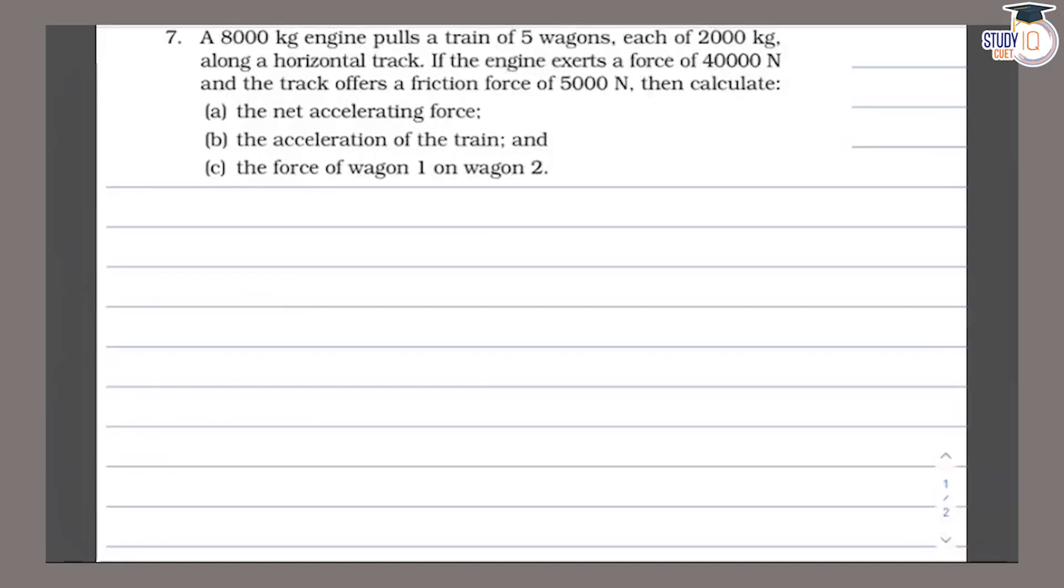This is question number 7 from class 9 NCERT chapter 4. There is an 8000 kg engine that pulls 5 wagons, each of 2000 kg, moving on a horizontal track. If the engine exerts a force of 40,000 newton and the track offers a friction of 5,000 newton, then calculate: (a) net accelerating force, (b) acceleration of the train, and (c) the force of wagon 1 on wagon 2.